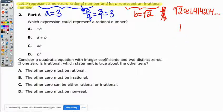Let's take it step by step and do part A. It says which expression could represent a rational number. Remember, as we're doing these, we want rational numbers.